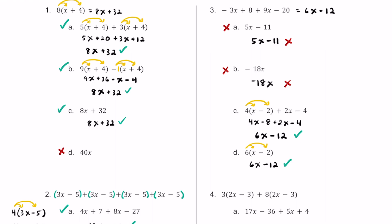For answer choice C, if you distributed and combined like terms, you can see that this expression is equivalent. For answer choice D, using just the distributive property, you can see that this expression is also equivalent. And going back to number 1, writing 40x — noting that there's an x there — just to be consistent with all the other problems.